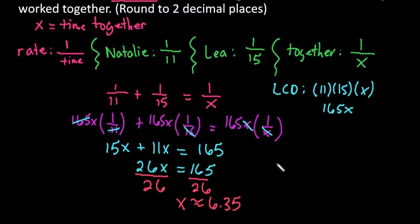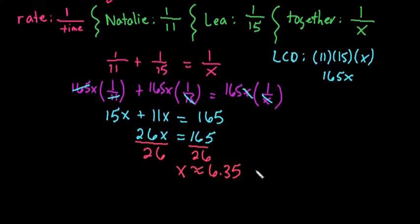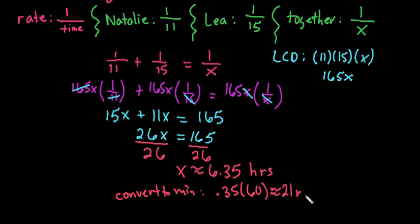If you had to put it in time, so this would be 6.35 hours. If you wanted to convert it to hours and minutes, we would just take the 0.35 times 60 since there's 60 minutes in an hour. And that would give us approximately 21 minutes. Remember, I did round.